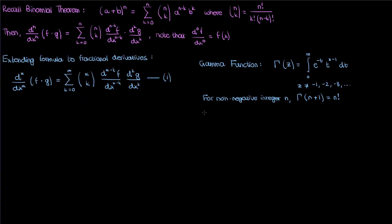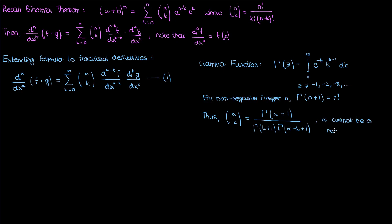Recall that the gamma function, which I've discussed in my gamma function video and in a previous video on fractional calculus, is essentially a generalized factorial. For some non-negative integer z it is defined by a specific formula, and for a non-negative integer n the gamma function evaluated at n plus 1 equals n factorial. The combination alpha choose k for non-integer alpha and k can therefore be written using the gamma function, which also restricts us from using negative integers for alpha — the negative first derivative being just the integral, which we'll handle later in the series.